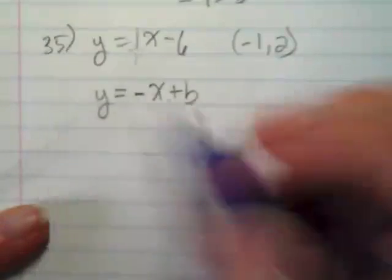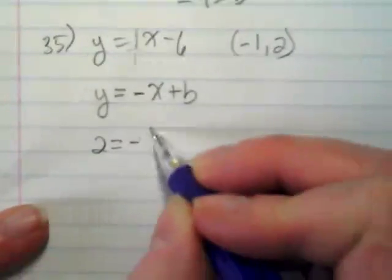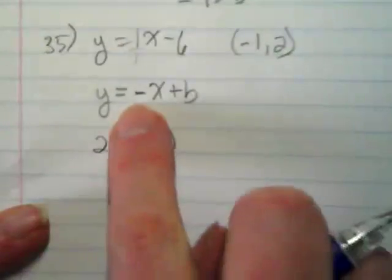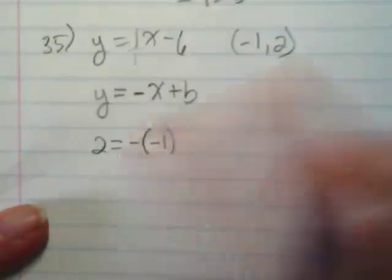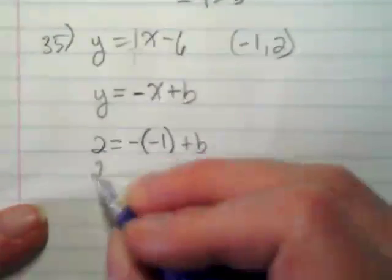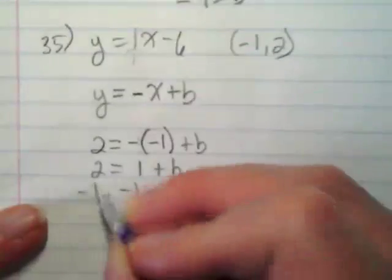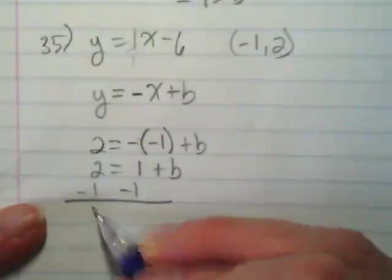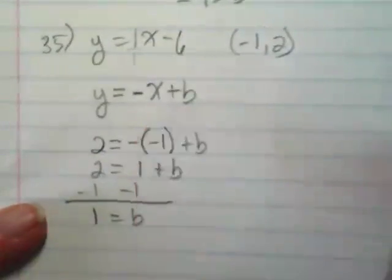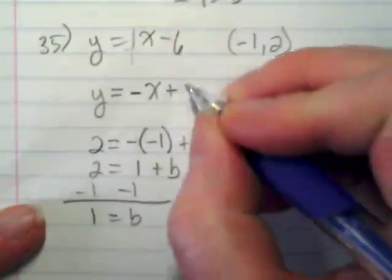So we're going to use what we have from this equation, and we're going to put 2 equals negative 1, because I'm taking this negative and this x from here, plus b. Negative negative 1 is going to become a positive 1, which I'm going to subtract, and I'm going to get 1 is equal to b. So this equation up here, we would replace this plus b with plus 1.